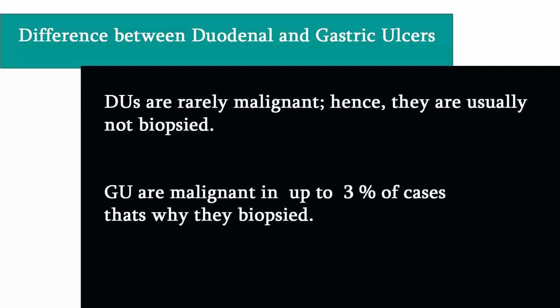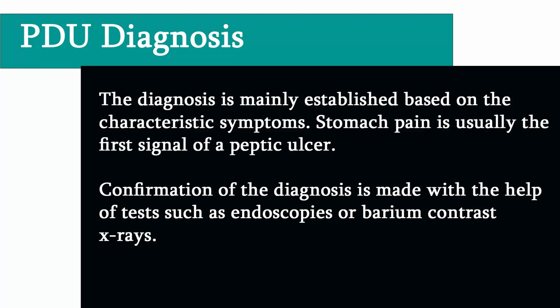The diagnosis is mainly established based on the characteristics of symptoms. Stomach pain is usually the first signal of peptic ulcer. In some cases, doctors may treat ulcers without specific tests and observe whether symptoms resolve. Confirmation of diagnosis is made with endoscopies or barium contrast X-rays, typically ordered if symptoms do not resolve after a week of treatment, or when they first appear in a person over age 45, or with symptoms such as weight loss, because stomach cancer can cause similar symptoms.